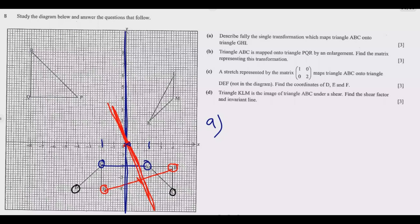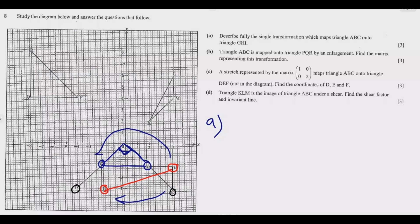So the point of intersection — the center of rotation — is at the origin. The next step is to find the angle and direction of rotation. Joining any two corresponding points to the center, the angle of rotation is 90°. Going clockwise it is 90°; going anticlockwise it would be 360 minus 90, which is 270°.